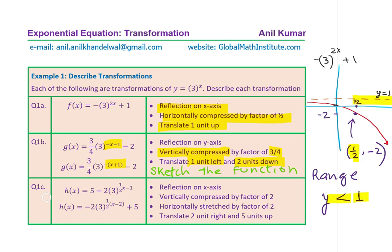Now let's look at question 1c: h(x) equals 5 minus 2 times 3 to the power of (half x minus 1). It is very important to rearrange and write — rearrange the equation into standard form. When you don't see the equation the way you should be seeing it normally, rearrange so that you get it in standard form, and then start writing the transformations.